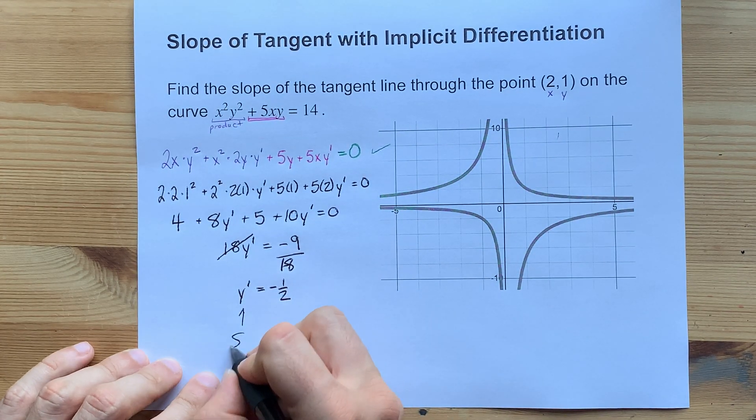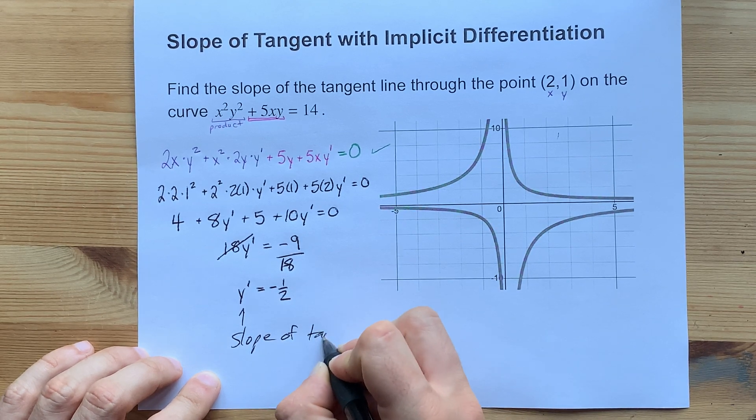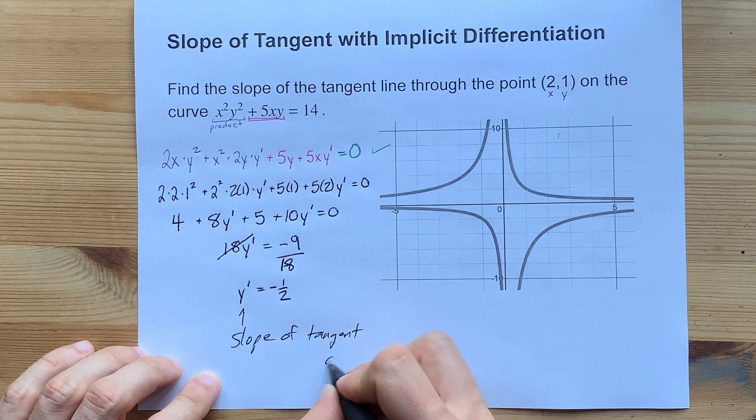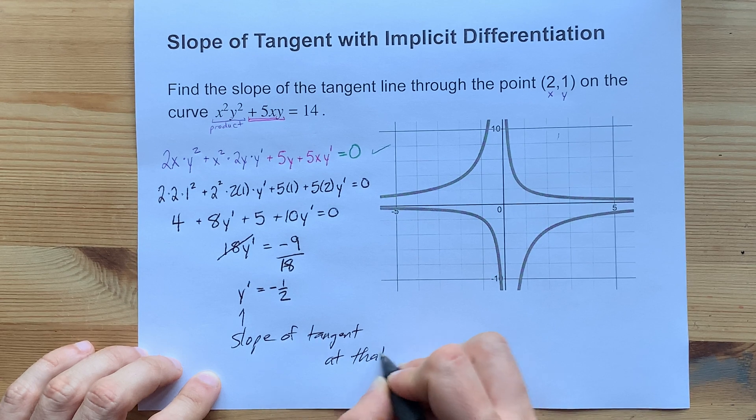y prime, by definition, is the slope of the tangent at that point. And so you are done.